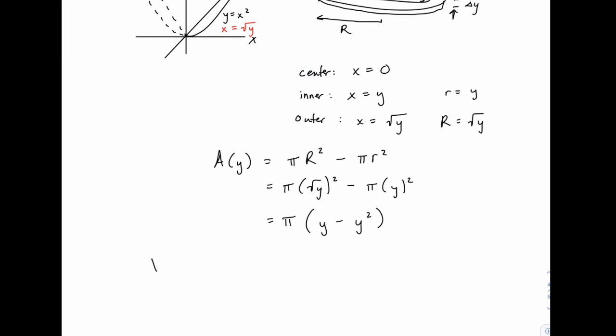Which means when we go to find the volume, we just need to integrate, pulling the pi out in front, we're looking for the integral of y minus y squared.